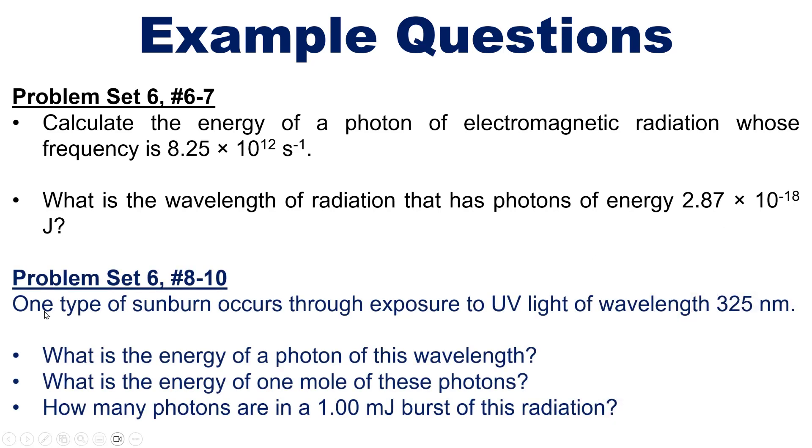One type of sunburn occurs through exposure to UV light of wavelength 325 nanometers. What is the energy of one photon of this wavelength? What is the energy of one mole of these photons? And how many photons are there in a one millijoule burst of this radiation?